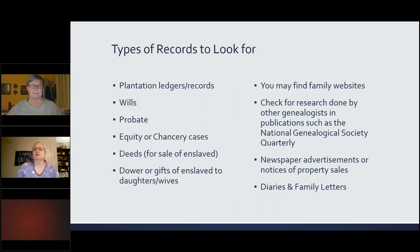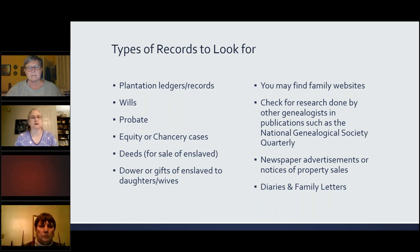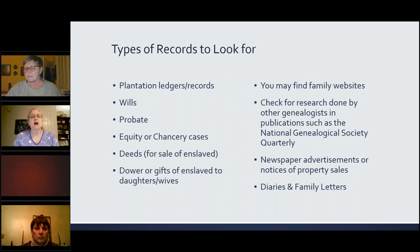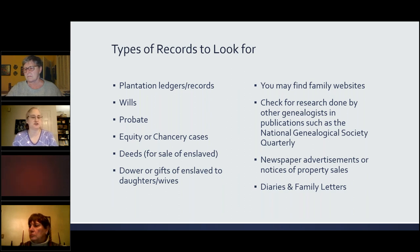Some types of records to look for — and this is not an exhaustive list, just the tip of the iceberg. You want to look for plantation records and ledgers, account books. Wills will often name enslaved persons because they were unfortunately property. Probate records, along with wills, and equity or chancery cases — equity is what South Carolina calls that court, chancery is what Virginia calls it. Do take a look in the area you are researching to find out which court handled questions or concerns about probate and wills.